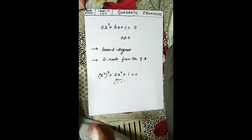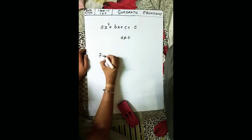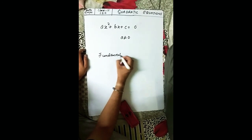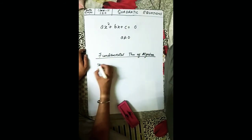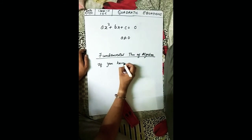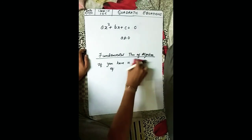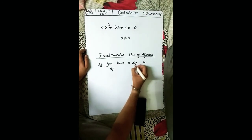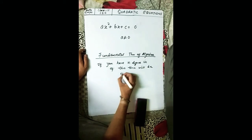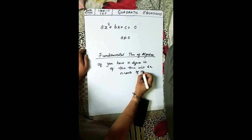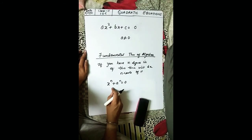Now comes the very important thing: the Fundamental Theorem of Algebra. It simply says that if you have an nth degree equation, then there will be n roots of it. In other words, if you have x^n + a^n = 0, then the number of roots will be n.